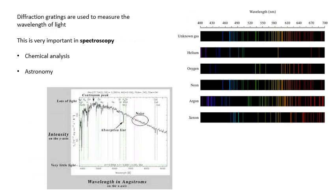Diffraction gratings are used to measure the wavelength of light is the main use for them, which is very important. Now, spectroscopy means looking at the spectra. In atomic physics, you will know that different elements emit and absorb certain wavelengths, which is all to do with energy levels.